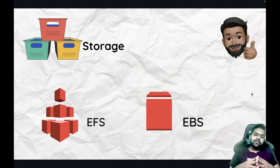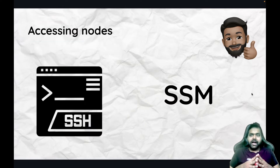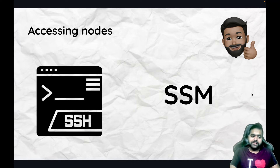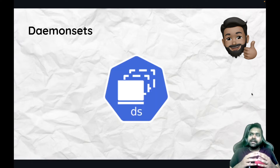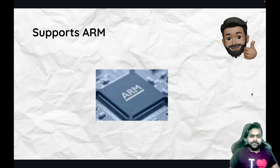From a storage perspective, there are no restrictions — you can use EBS, EFS, or S3. If you need to access these nodes, you can use SSH or SSM (Systems Manager, an AWS-native facility). DaemonSets are also supported on managed node groups — we'll see in upcoming slides why this was important to mention.